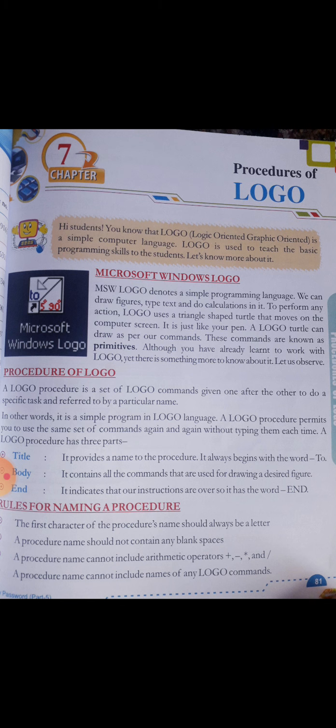Microsoft Windows Logo — MSW Logo — denotes a simple programming language. We can draw figures, type text, and do calculations in it. To perform any action, Logo uses a triangle-shaped turtle that moves on the computer screen, just like your pen. A Logo turtle can draw as per your commands. These commands are known as primitives. Although you have already learned to work with Logo, yet there is something more to know about it.